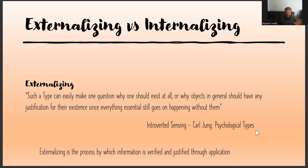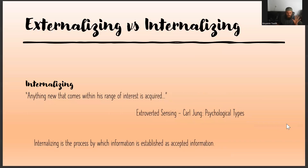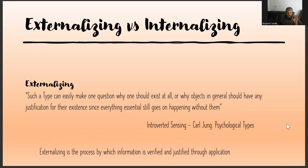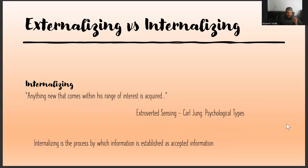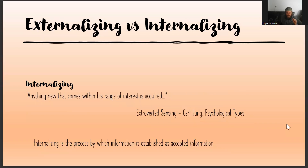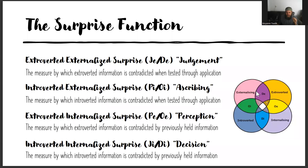Really the center of this is externalizing versus internalizing — these are the two things to take away from here. The functions are doing them. The extroverted externalizing is De and Je, and introverted externalizing is Oi. This is how the needs are built. So that's the video, and hopefully this was understandable. Bye guys.